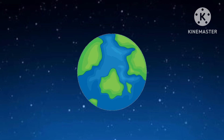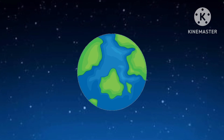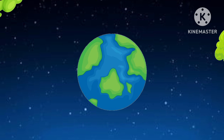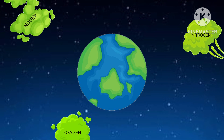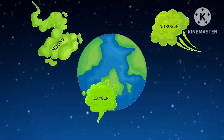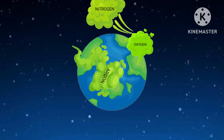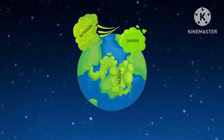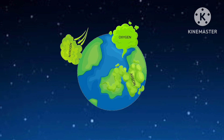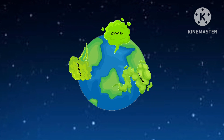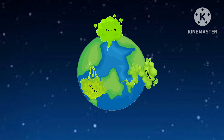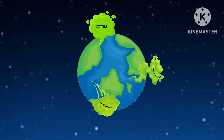Now the question is: what is atmosphere? An atmosphere is a blanket of gases that surrounds Earth. Argon, Oxygen, and Nitrogen are the main constituents of the atmosphere.